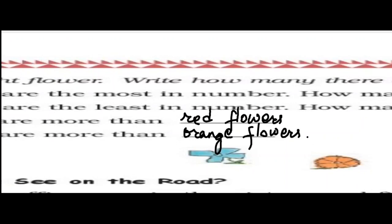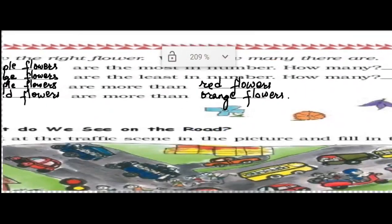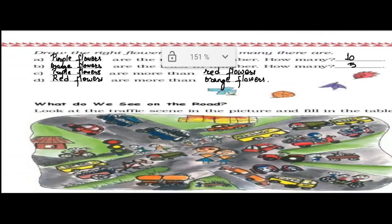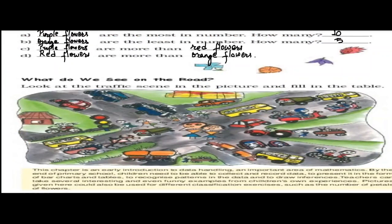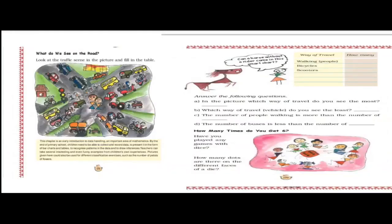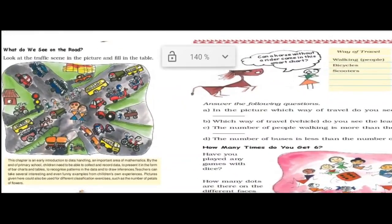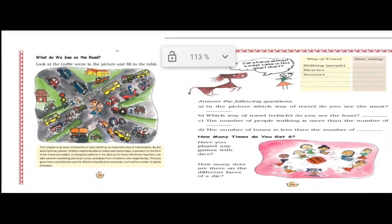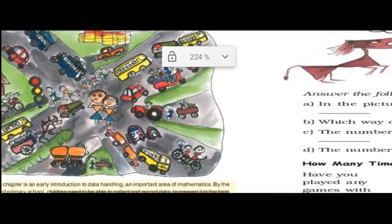Now the next topic, children: what do you see on the road? You can see that there are many vehicles on the road — people walking, motorcycles, and autos are also there. Let us see the question based on this. Look at the traffic scene in the picture and fill in the table. You have to find walking people, bicycles, and scooters. How many people are walking here?